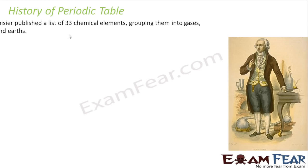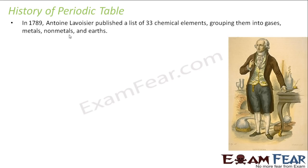Let's study the history of the periodic table — how this periodic table came. By 1789, there were only 33 chemical elements. Only 33.